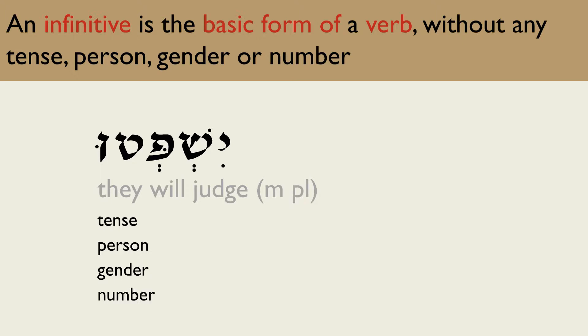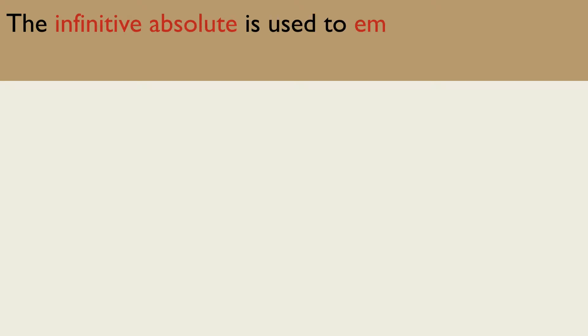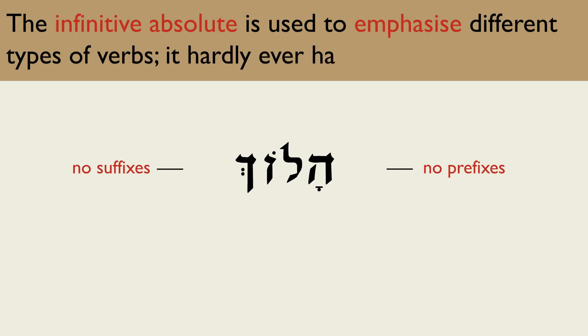An infinitive form of the same verb is lishpot, meaning 'to judge,' which does not have any of those four characteristics. There are two infinitives in Biblical Hebrew: the infinitive construct and the infinitive absolute.